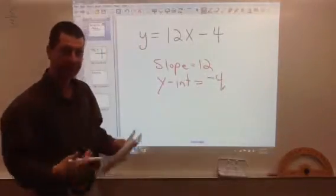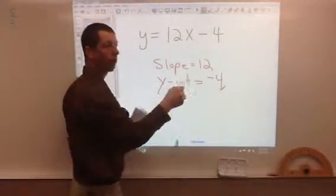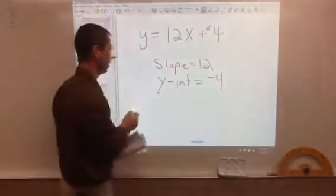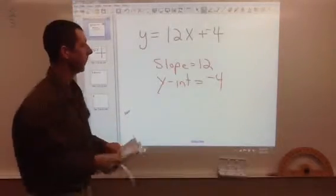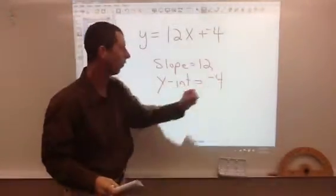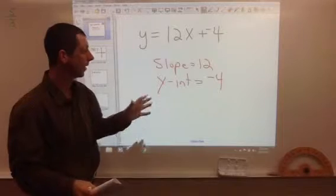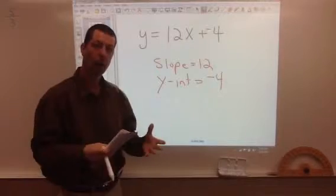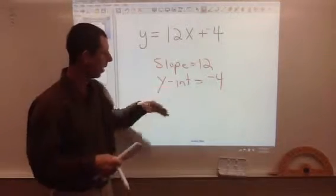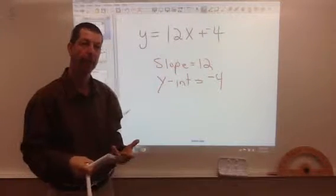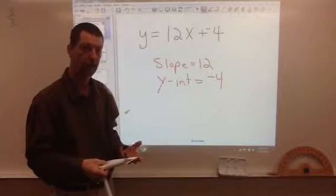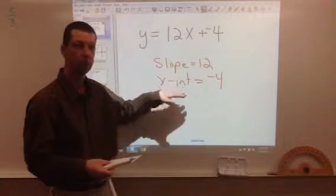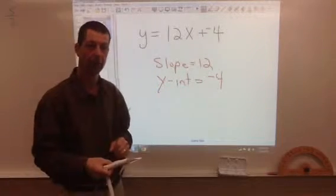And your y-intercept is going to be equal to negative 4. Now, the reason it's negative 4 is because it's minus 4 here. One thing that you probably should get in the habit of doing is adding the opposite here, and then you'll get it as negative 4 instead of maybe putting 4 there and getting it wrong. Now, you might wonder, why are you finding the slope and the y-intercept? Well, generally what happens is you graph these on a coordinate grid, and once you have the slope of y-intercept, you can use these two to graph it.